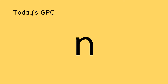This one is 'n'. So this GPC is 'n, n, n' — no. Can you say 'n'? 'N' for no. Is there something on your body that begins with 'n'? Eyes? No. Hair? No. Ears? No. Chin? No. Nose? Yes! Nose begins with 'n'. Excellent job everybody.